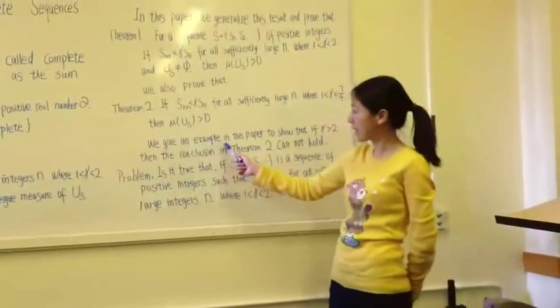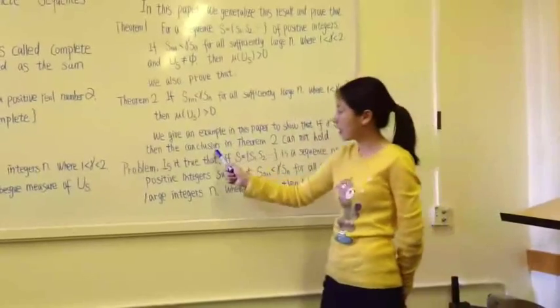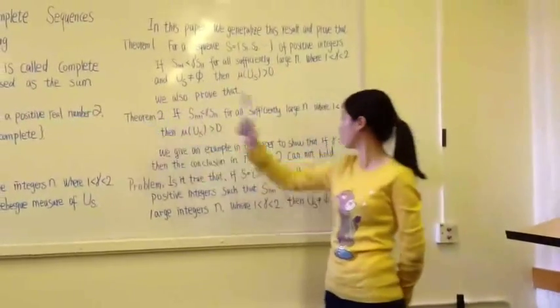We give an example in this paper to show that if gamma is greater than 2, then the conclusion in Theorem 2 cannot hold.